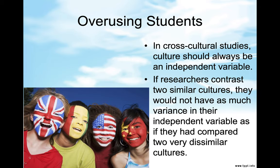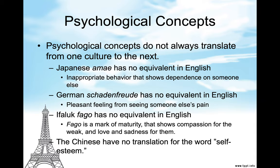In cross-cultural studies, culture should always be an independent variable. If researchers contrast two similar cultures, they would not have as much variance in their independent variable as if they had compared two very dissimilar cultures. Psychological concepts do not always translate from one culture to the next. Japanese "amae" has no equivalent in English — it is the inappropriate behavior that shows dependence on someone else, kind of like codependency where one person is grouchy and the other is very subservient. In Japan it's very, very common, whereas if I saw somebody acting like this, I would probably diagnose it as codependence.